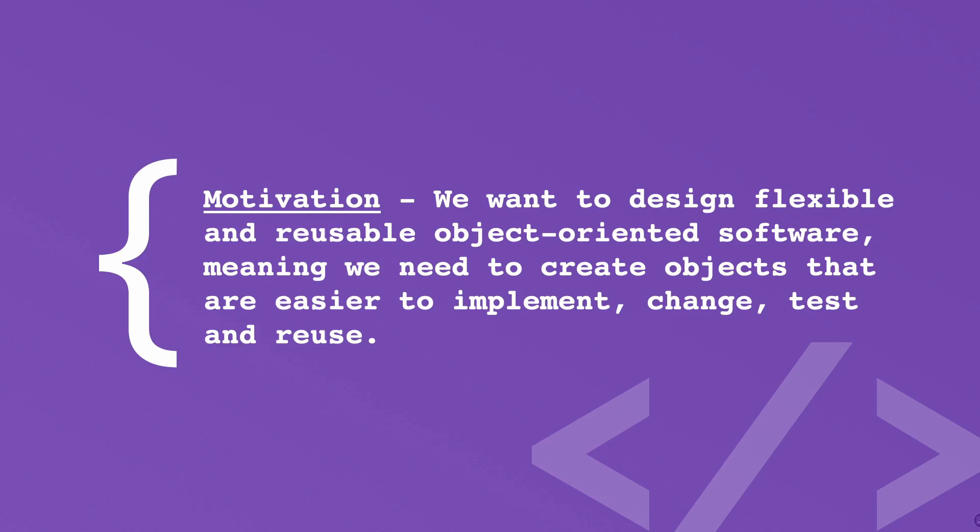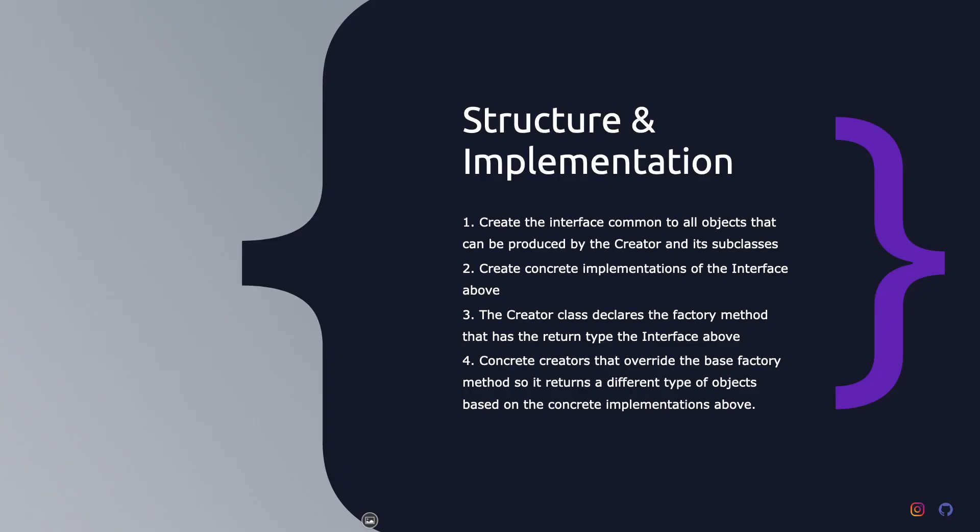By doing that we make sure that the code we write can easily be extended without having to modify the whole implementation or change the logic based on new requirements. As an example, we can think of a framework that has a way to extend its internal components. The framework doesn't know beforehand the exact type of objects the client will implement, so the factory method pattern comes to help by encapsulating the knowledge the client — in this case the subclass — will create, and moves this knowledge out of the framework.